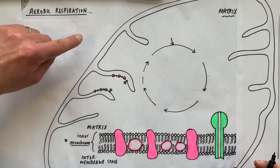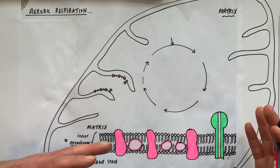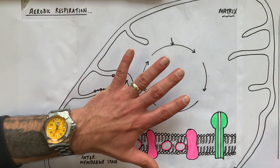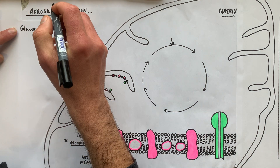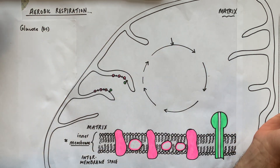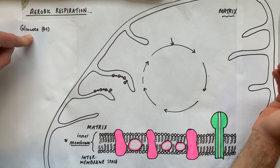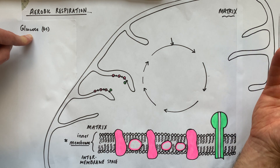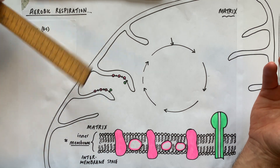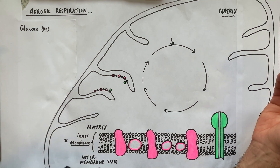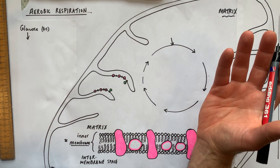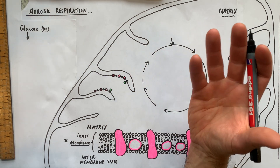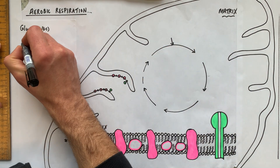We start with glucose in the cytoplasm. This diagram shows a mitochondrion in cross section; all the white area outside is the cytoplasm. Glucose is a six-carbon hexose sugar — a monosaccharide — and it enters the cell through a glucose carrier protein via facilitated diffusion from the tissue fluid. Once inside the cytoplasm, glucose is phosphorylated twice. This is called the investment phase because it requires two ATP molecules to provide the phosphate groups, giving us hexose phosphate.